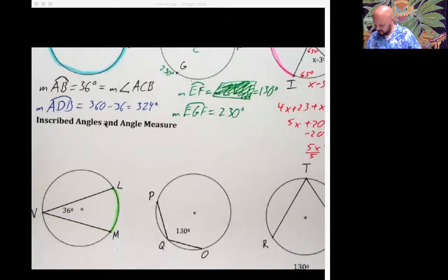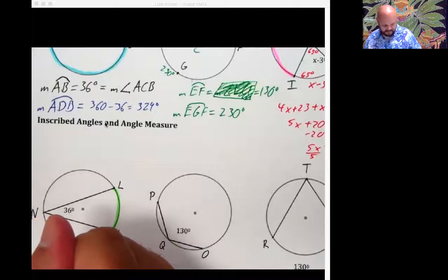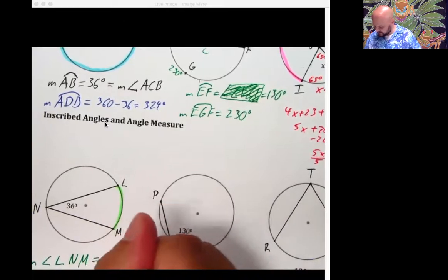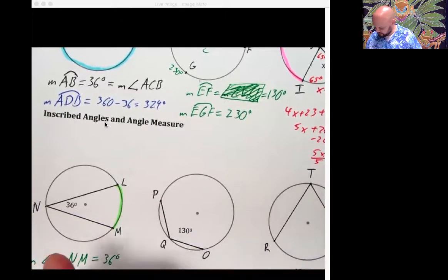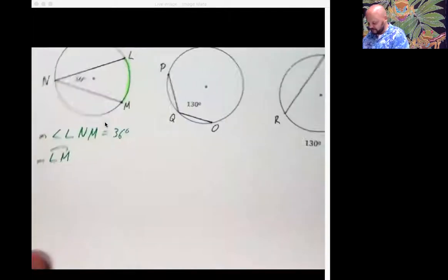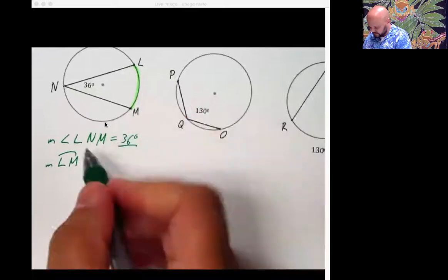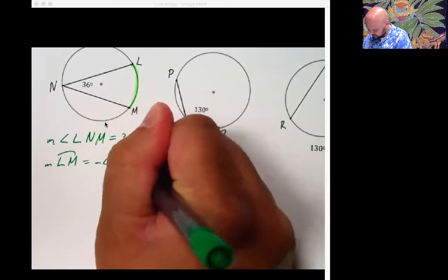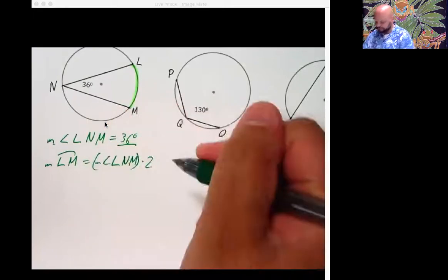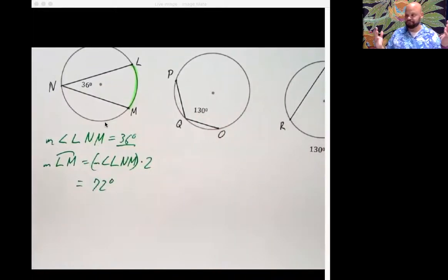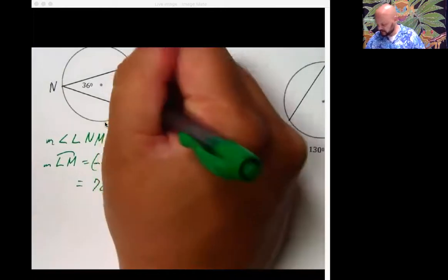The secret formula. If you've got the measure of angle LNM. And right now that is 36 degrees. And I want the measure of arc LM. I'm going to take this 36 and I'm going to times it by 2. That's all I've got to do. It's this thing or the angle measure times 2. So this bad boy will be a total of 72 degrees. That's all. That's all we've got to do. 72.